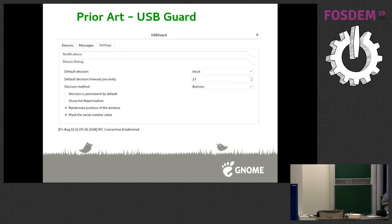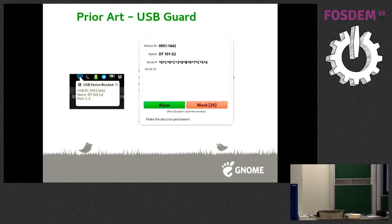In practice, when you plug a new device, you get this pop-up. It has a bunch of numbers and letters — the serial number, the name of the device, the USB class — and you have 23 seconds to decide if you want to allow it or block it. If you don't act within those 23 seconds, this pop-up will go away and you have a USB device that will not work.